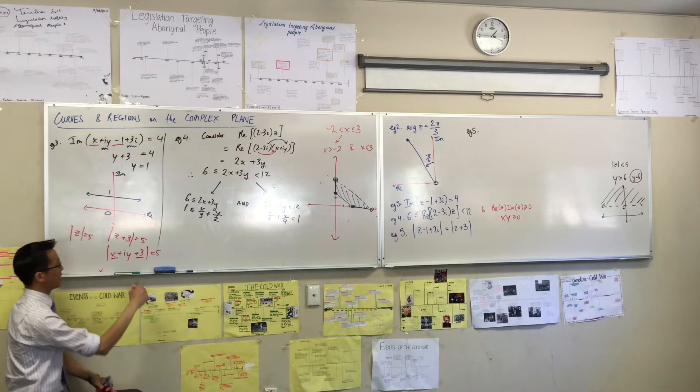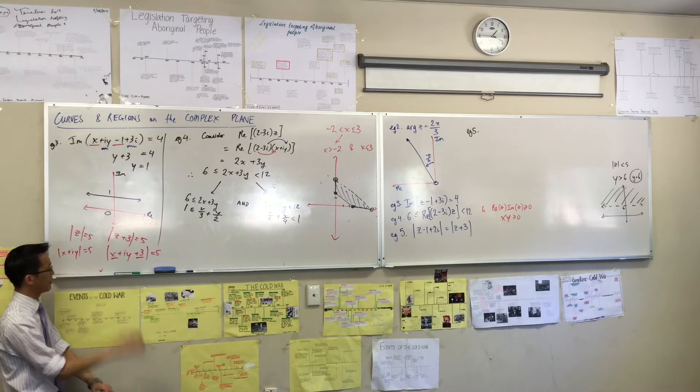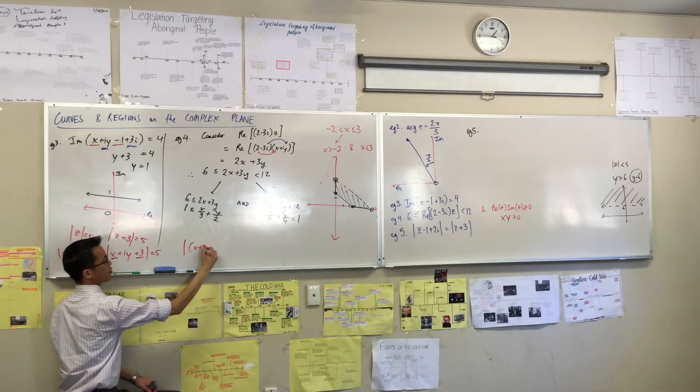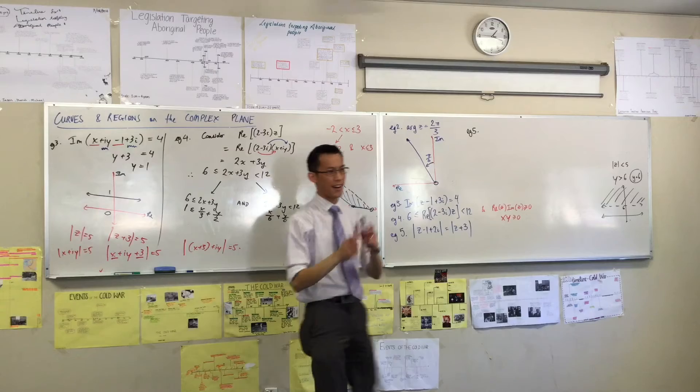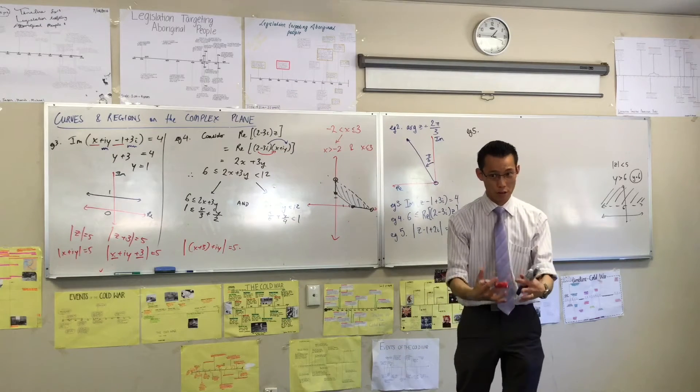So what this really is, instead of mod x plus iy equals 5, it's really mod of x plus 3 plus iy. Do you agree with that? Now think for a second. Remember I said this is going to draw up all your knowledge of graphing already.